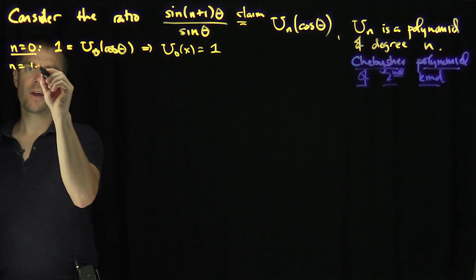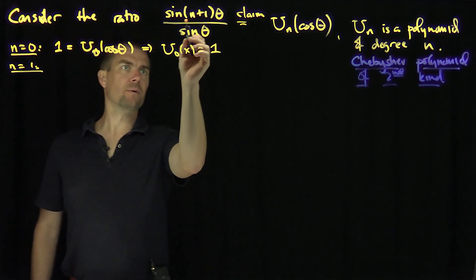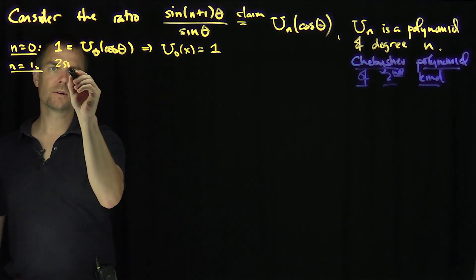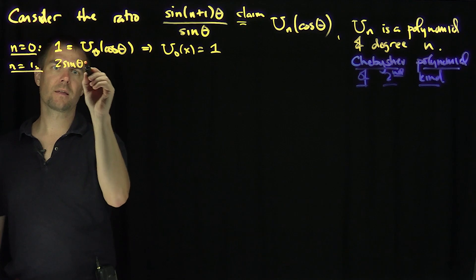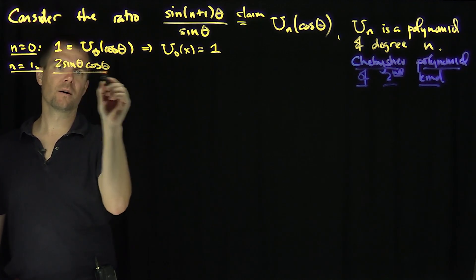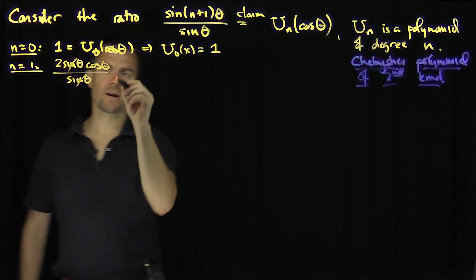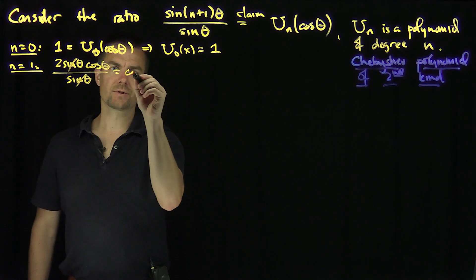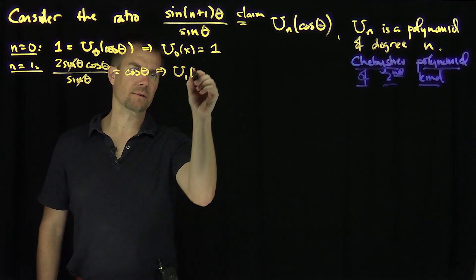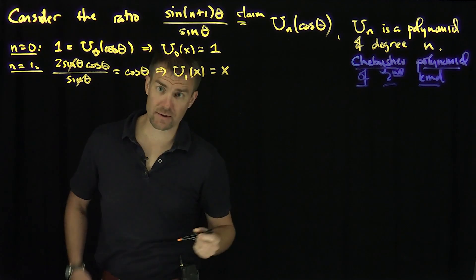When n is equal to 1, we have sine of 2θ, which is 2 sin θ cos θ, over sine θ. The sines cancel out, and so this gives us cosine θ, and that tells us that U₁(x) = x.